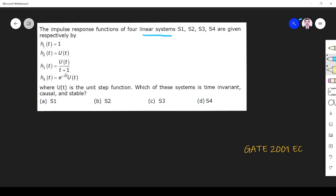S4 are given respectively by H1(t) = 1, H2(t) = U(t), H3(t) = U(t)/(t+1), H4(t) = e^(-3t)U(t), where U(t) is the unit step function. Which of these systems are time invariant, causal and stable?